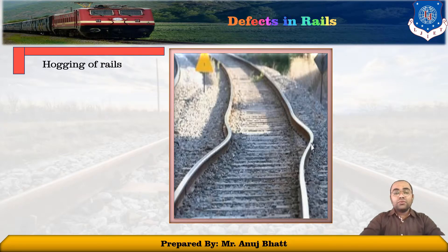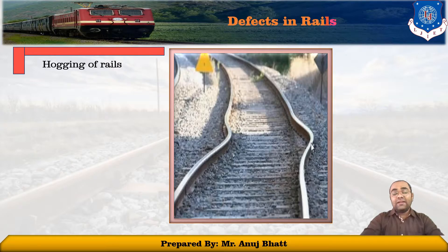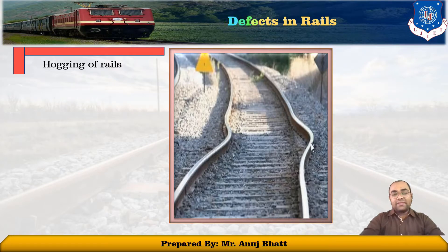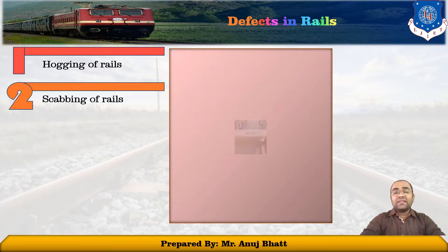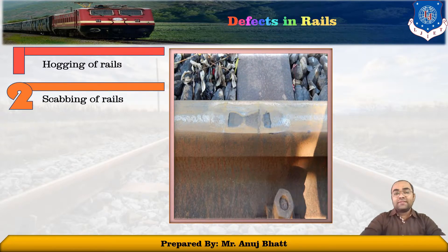The causes lead to deterioration of track quality, and such defects can be solved by providing shoal packings at those particular places. The second defect is the scabbing of rails.